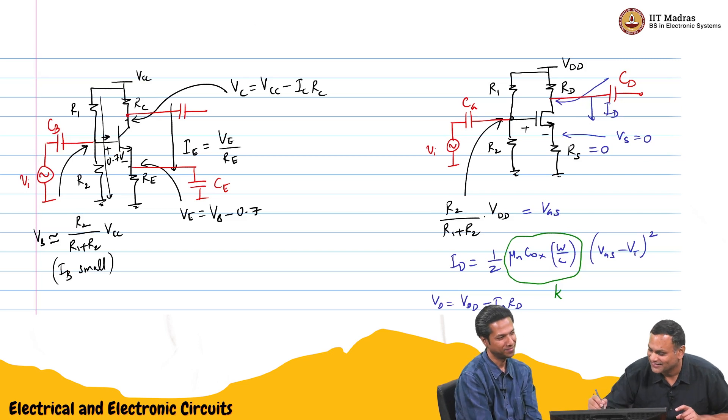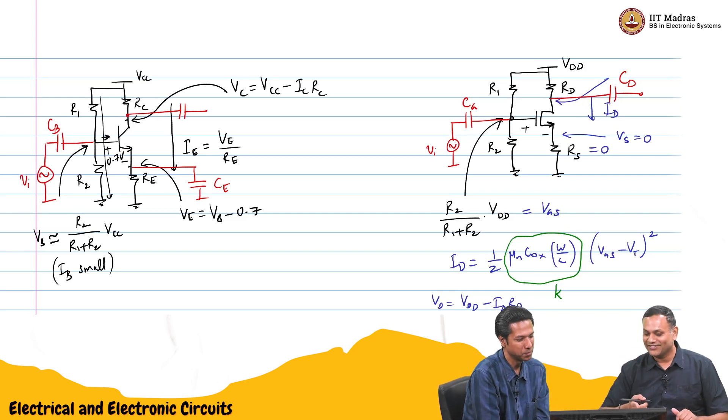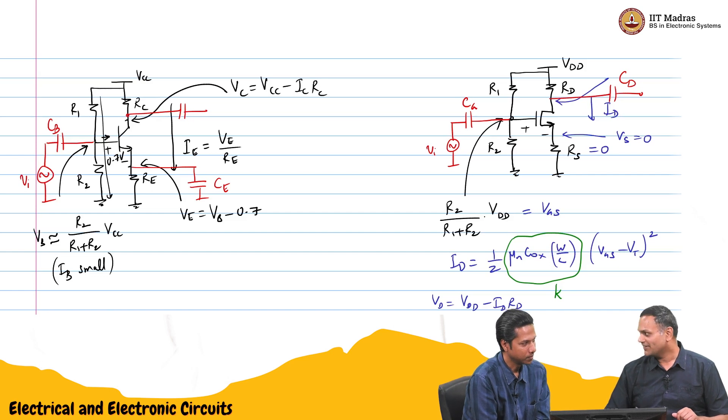Let us do that. I like that comparison with the common emitter amplifier. We actually swept the DC input DC voltage. And then we saw what happens to the output. We should do that for this also.